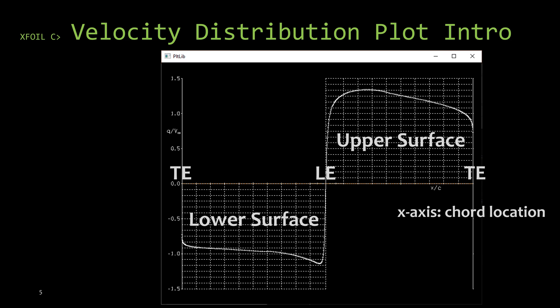XFOIL does something a little different than a typical velocity distribution plot. It actually separates the lower surface from the upper surface, and flips the sign on the lower surface so that it has a negative value. A velocity distribution plot is similar to a pressure distribution plot — the pressure distribution shows how pressure changes around the surface of the airfoil. Per Bernoulli's equation, higher velocity means lower pressure, and lower velocity means higher pressure.